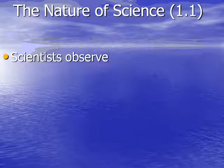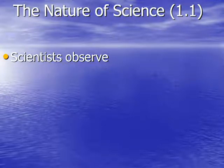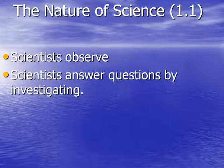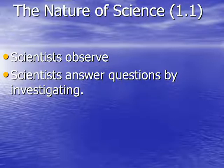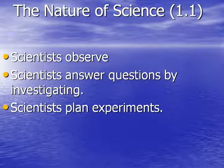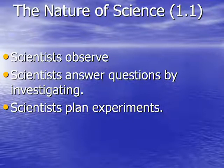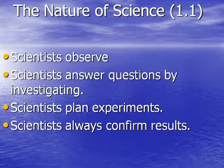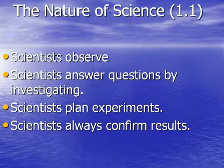The first thing: scientists observe and make observations to try to figure out why things happen. They also try to answer questions by investigating. Once they start observing certain phenomena or certain things happening in the real world, they start an investigation to see why. Then they plan experiments. Once they come up with a theory of why they think something is happening, they'll plan an experiment to see if their theory is correct, and then they always confirm their results — whether they were correct or incorrect.